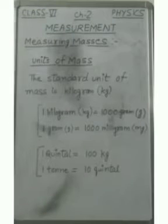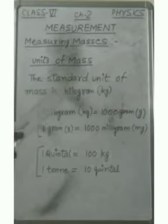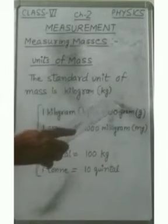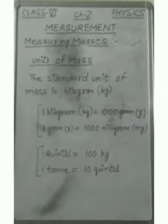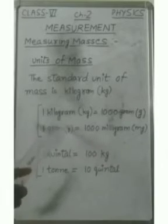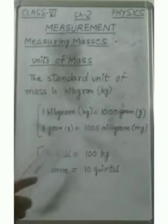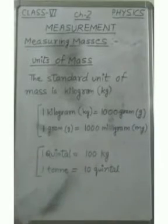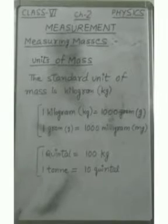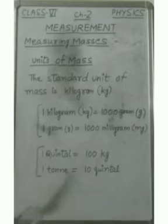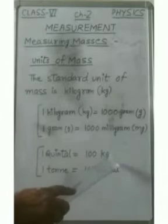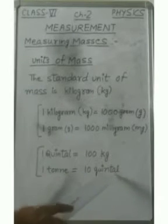Now if we talk about the units of mass, the standard unit of mass is kilogram and it is written as kg. Small quantities of substances are expressed in the units of gram and milligram. Here 1 kg is equal to 1000 gram and 1 gram is equal to 1000 milligram. Larger quantities of substances are expressed in the unit of quintal or ton. 1 quintal is equal to 100 kilograms or 1 ton is equal to 10 quintal.